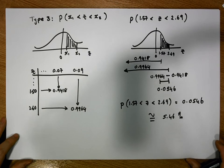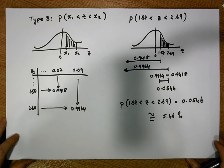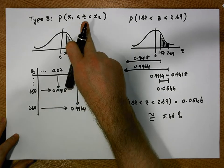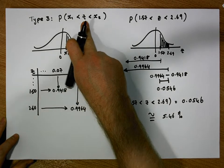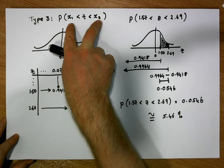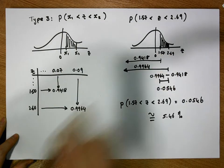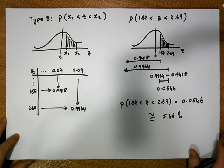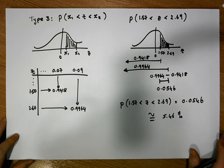Thanks very much for your time. That concludes this short video on the calculation of type 3 probabilities — probabilities of z-scores where the two bounds are two positive values. I'm Jonathan Lambert from the Mathematics Development and Support Service at the National College of Ireland. Thank you very much.